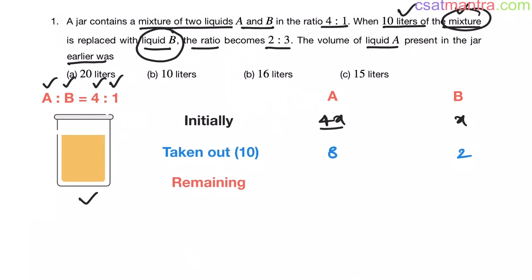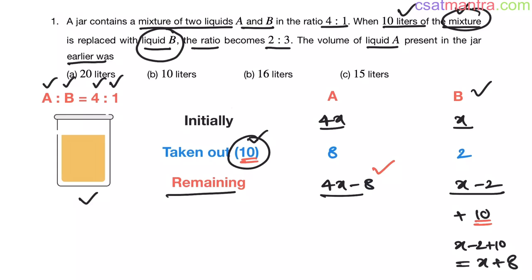So, initially, you have 4X and X. Out of that, you have taken 10 liters of mixture. Now, the remaining quantity of A would be 4X minus 8 and B would be X minus 2. Now, you have replaced this 10 liters mixture with liquid B. That means, you are adding 10 liters to this quantity. Now, the B value would be X minus 2 plus 10. That is equal to X plus 8. Now, after replacing this 10 liter mixture with liquid B, you have A as 4X minus 8 and B as X plus 8.